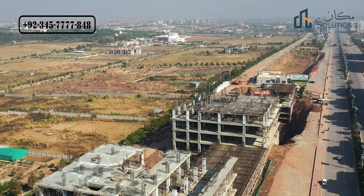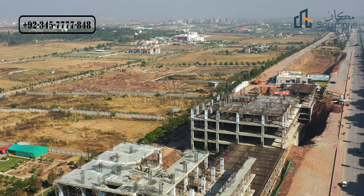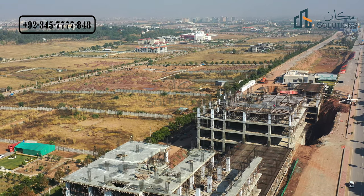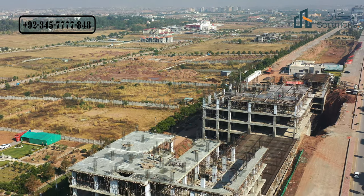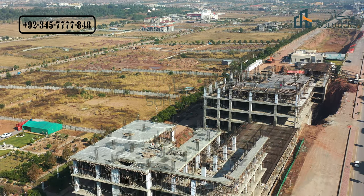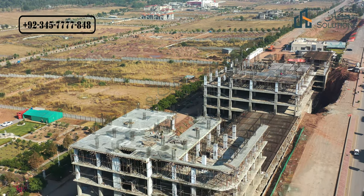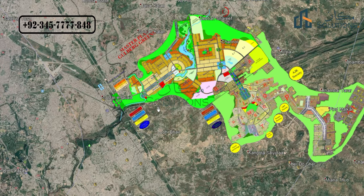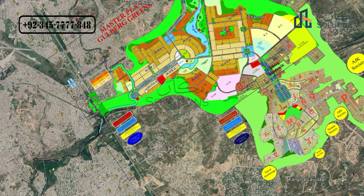Let's see the map of this society's overall dimensions, the plot sizes, and the details. We will see the Gulbuk Greens plus Gulbuk Residentia master plan. In the master plan, Gulbuk Greens is initially along the Islamabad Highway.